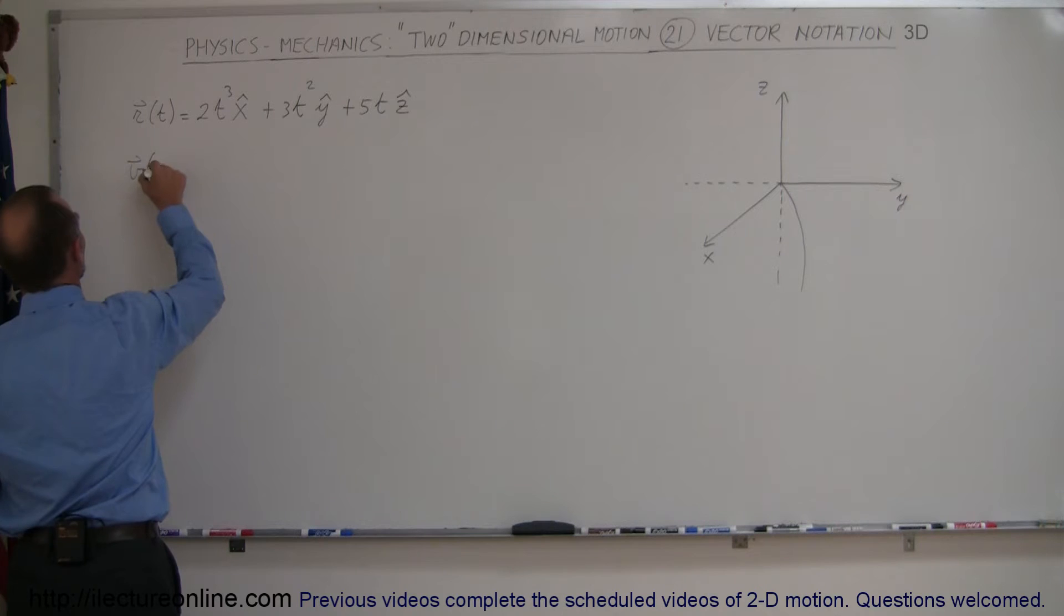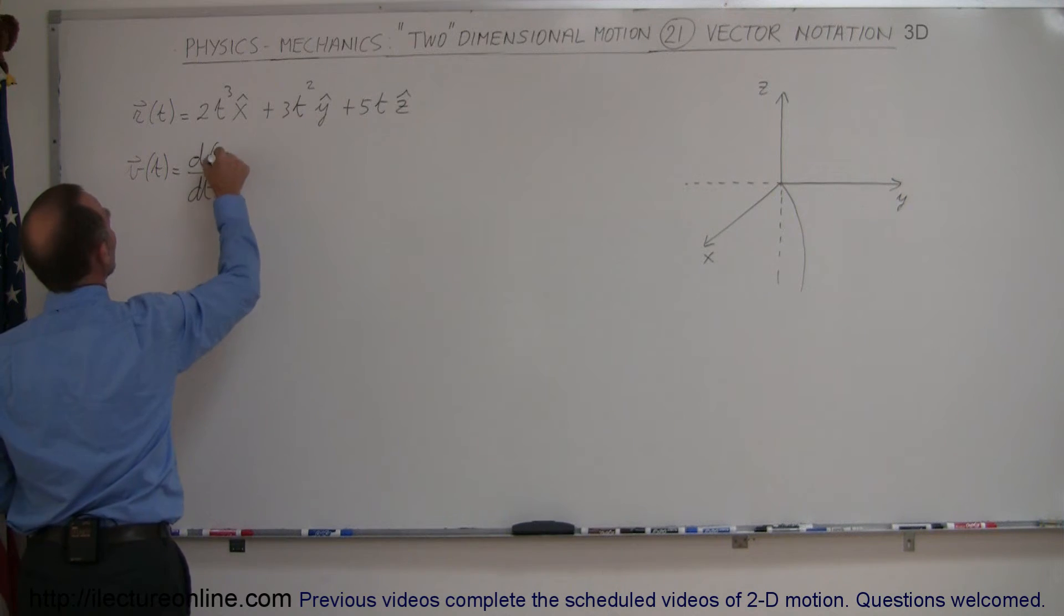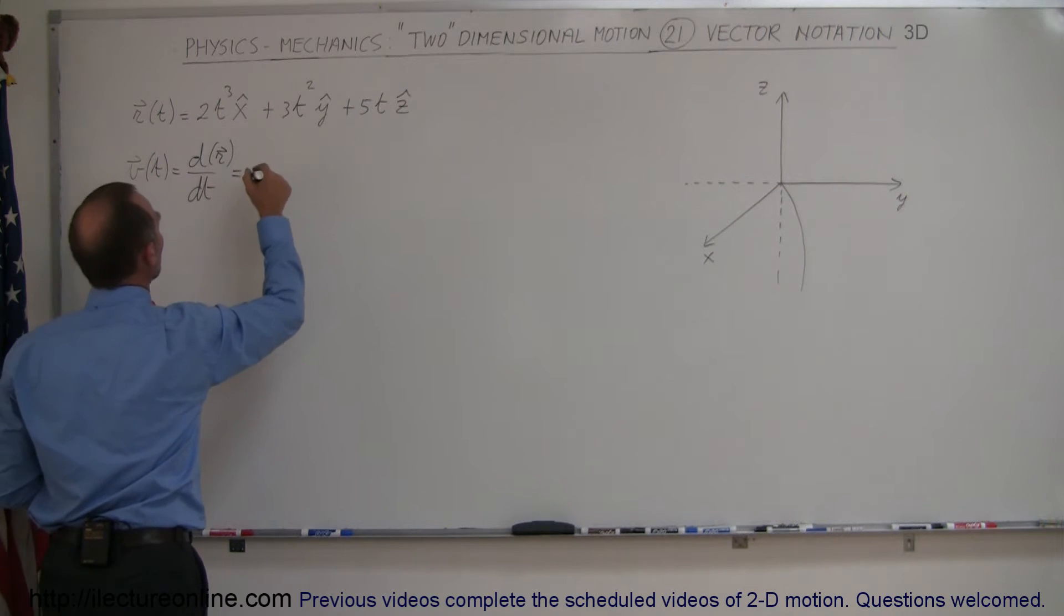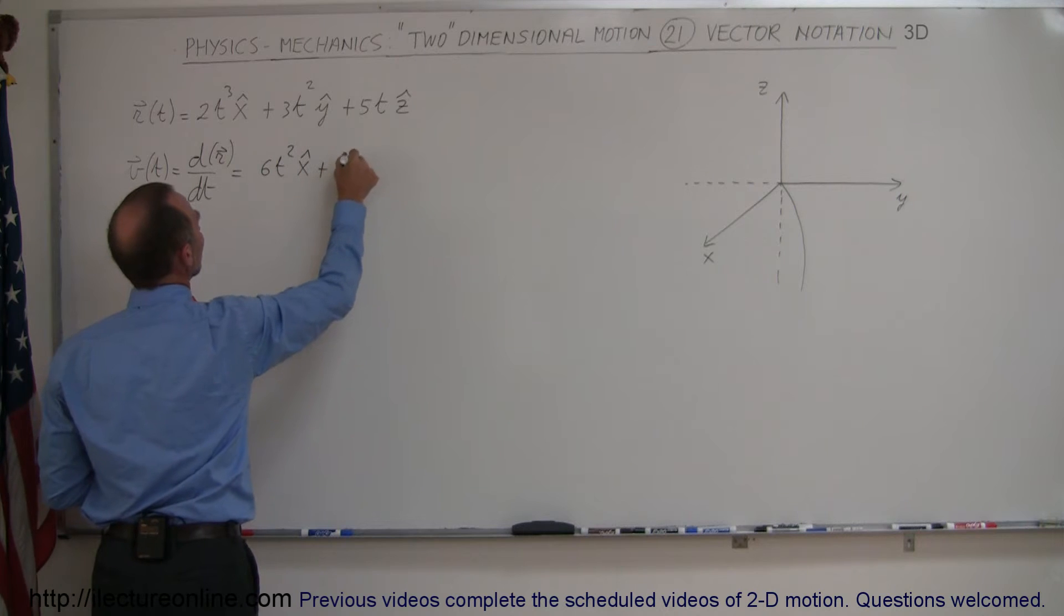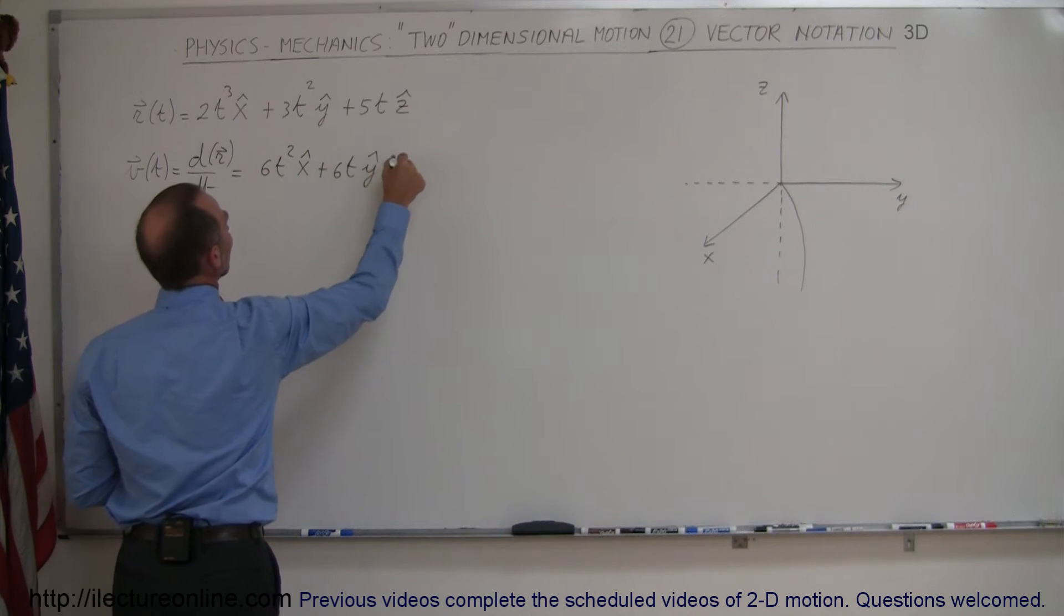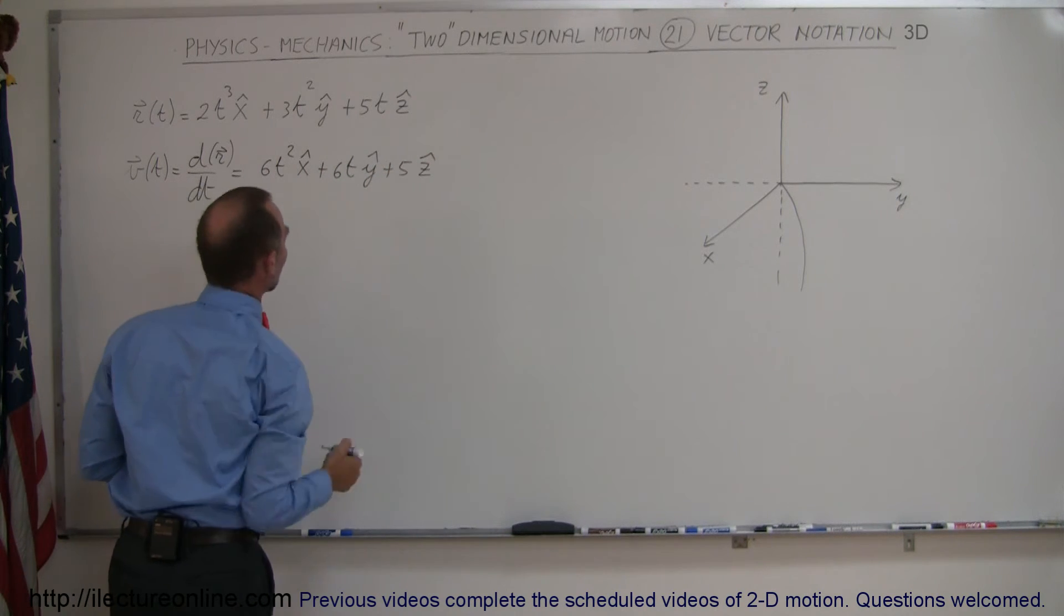The velocity vector as a function of time is simply the derivative with respect to time of the position vector. So that would be equal to 6t² in the x direction plus 6t in the y direction plus 5 in the z direction.